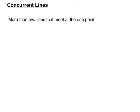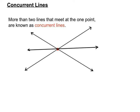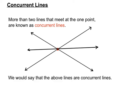Another geometrical term: concurrent lines. If something happens concurrently, it happens at the same time. So if more than two lines meet at one point, we call them concurrent lines. Here's one line and another line — they've got a point of intersection. Now if a third line comes along and crosses at exactly the same point as well, we'd say all three lines are concurrent lines.